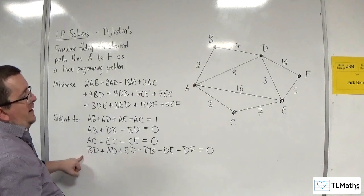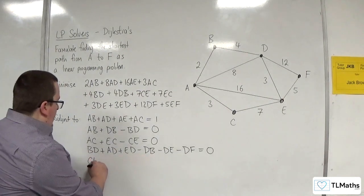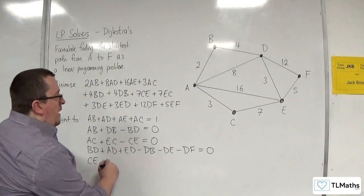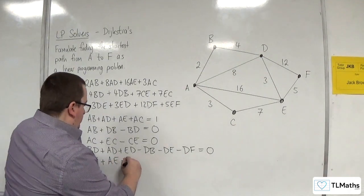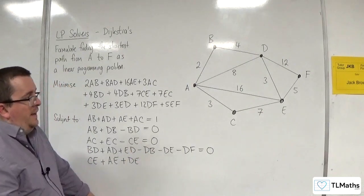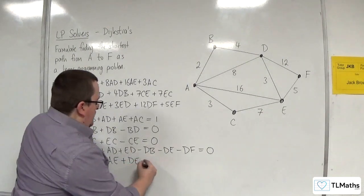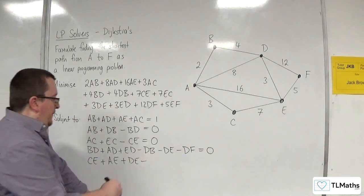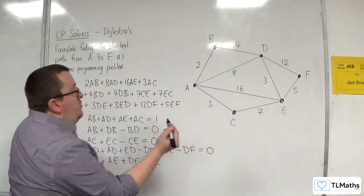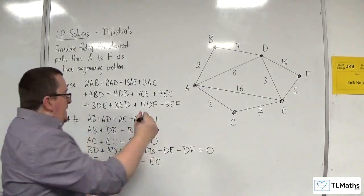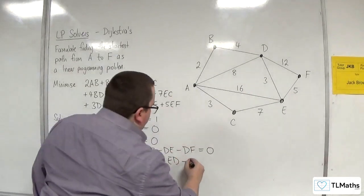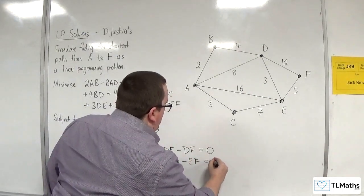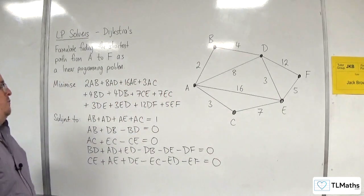Now E. So routes into E, we've got CE, we've got AE, we've got DE. Not FE. Take away the routes out, so EC, not EA, ED, and EF. So they're my routes out, and that's going to be equal to zero.